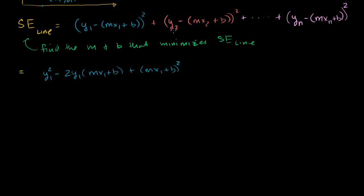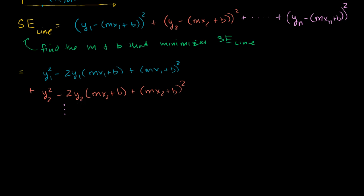Each term is only different by the x and y coordinates. So the next term, going down so we can combine like terms: y2 squared minus 2 times y2 times (mx2 plus b), plus (mx2 plus b) squared. Same exact thing, except now with x2 and y2 instead of x1 and y1. And we're just going to keep doing that n times, all the way until we get to the nth term, which when squared is: yn squared minus 2yn times (mxn plus b), plus (mxn plus b) squared.